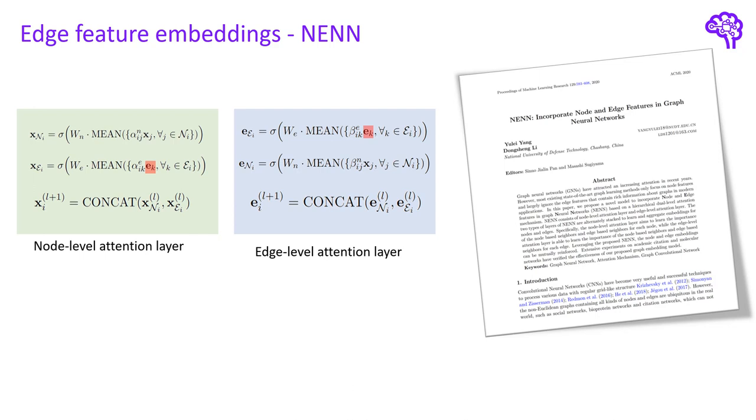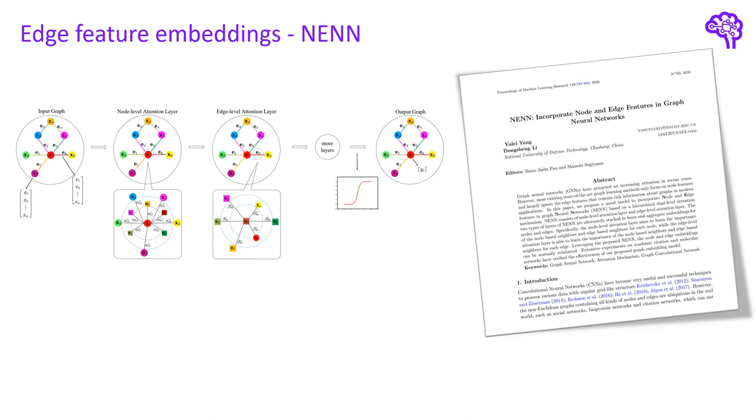The left layer generates node embeddings and the right layer edge embeddings. Additionally they use the attention mechanism and thus learn how important specific nodes or edges are for the new embedding. The importance coefficients are alpha and beta here. So to summarize it, this approach iteratively updates node and edge embeddings in order to merge both information together.